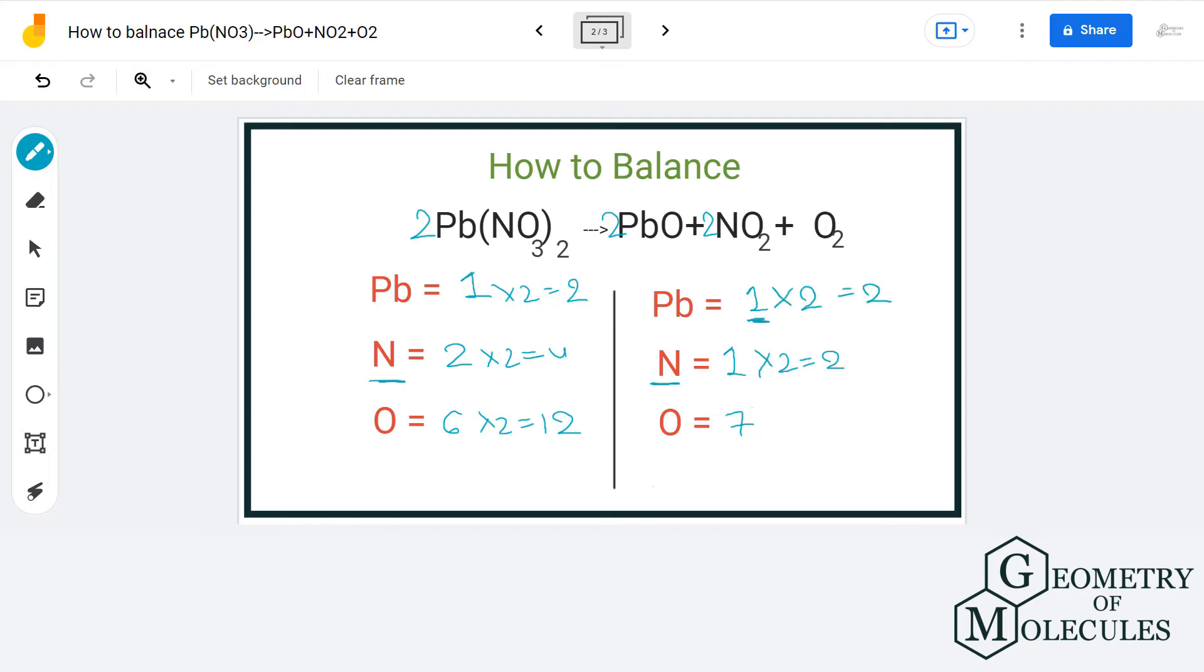Let us multiply NO2 by four to balance the nitrogen atoms on both sides of the equation.